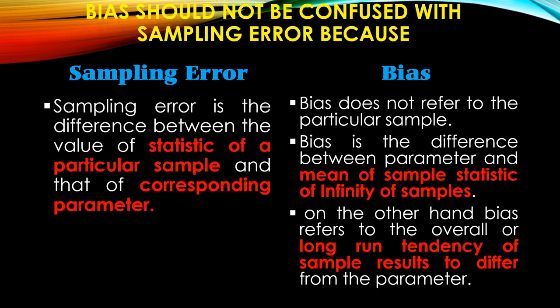Suppose we have a population of 100 units and we calculate mean mu from that population. Mu is obtained by adding all observations divided by the total number of observations. In this case, we draw a large number of samples — not a single sample — for example 10, 20, or 15 samples from that population. Each sample has a mean, so we take the mean of all sample statistics. The difference between the parameter and the mean of sample statistics is bias.